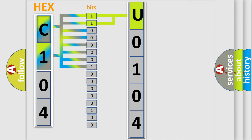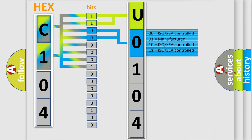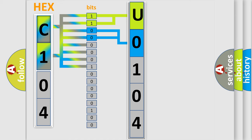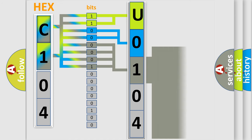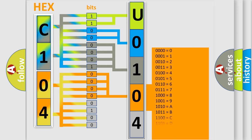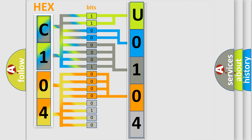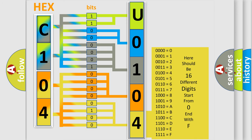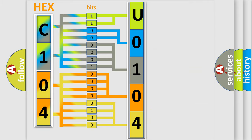The next two bits determine the second character. The last bits of the first byte define the third character of the code. The second byte is composed of a combination of eight bits. The first four bits determine the fourth character of the code, and the combination of the last four bits defines the fifth character. A single byte conceals 256 possible combinations.